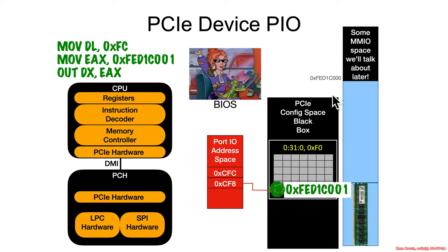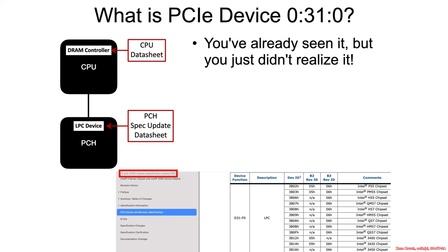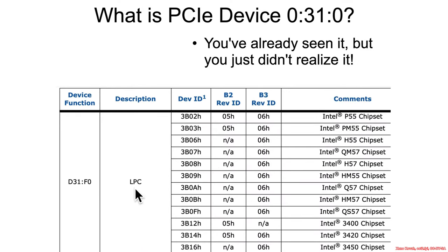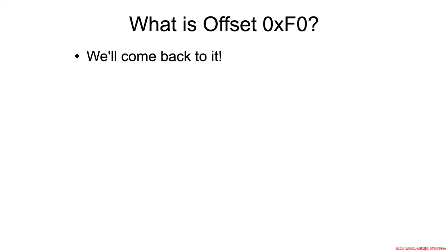What that's actually going to cause is some sort of memory-mapped IO — which we'll talk about later — to be mapped at the address FED1C000 that was written in there. That gives you a sense that you could put other addresses there and that would lead to memory-mapped IO at some other address. So what is PCIe device 0, 31, 0? You actually already saw it quite early in the chipset section. The LPC device is device 31, function 0, and Intel always reserves bus 0 for their own usage on their internal hardware. As for offset F0, we'll come back to it later.